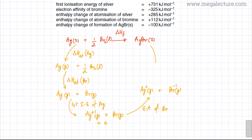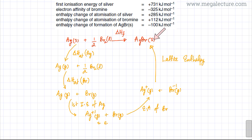The last path I'm drawing is the lattice enthalpy. This is the path whose energy needs to be calculated. Lattice enthalpy is when gaseous ions come together to form one mole of solid ionic lattice. This is gaseous ions getting together to form one mole of solid ionic lattice, and this is the only unknown — all the other values are already provided.